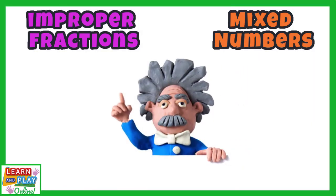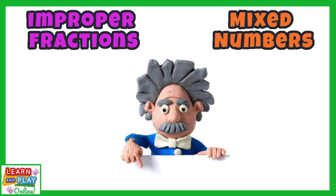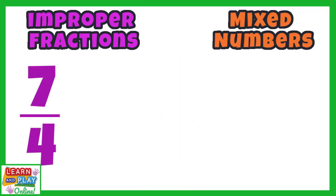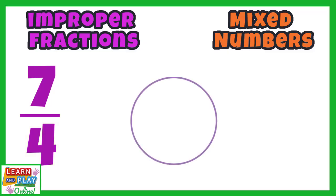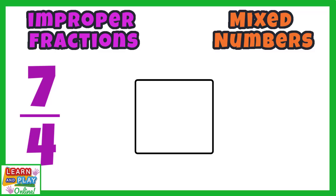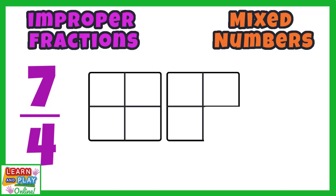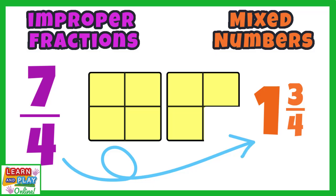We're going to do one more example together before you get a chance to draw visual representations and convert improper fractions into mixed numbers yourself. Here is the improper fraction 7 quarters. The numerator, 7, tells us that we have 7 equal parts of something. The denominator, 4, tells us that the whole was divided into quarters. Instead of using a circle, we will use a square as a whole this time. It does not matter what shape you use as long as you have the right amount of equal parts needed. This is what 7 quarters looks like. To write 7 quarters as a mixed number, we write down that we have 1 whole square and 3 quarters of a square. So 7 quarters is the same as 1 and 3 quarters.